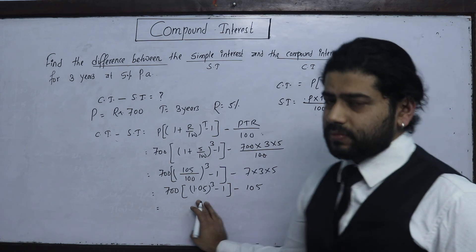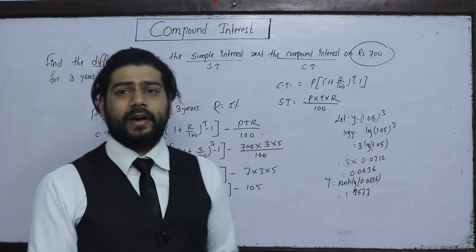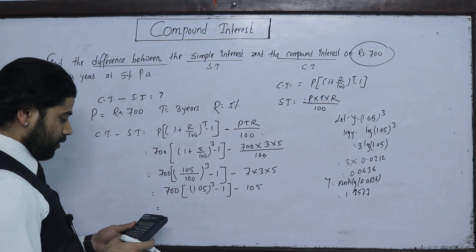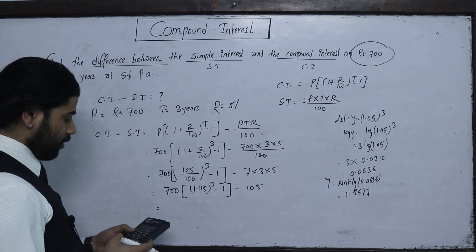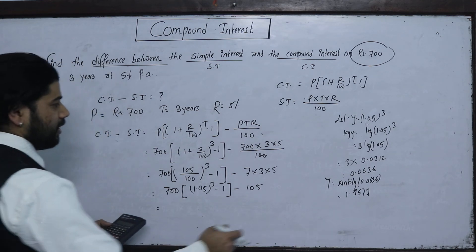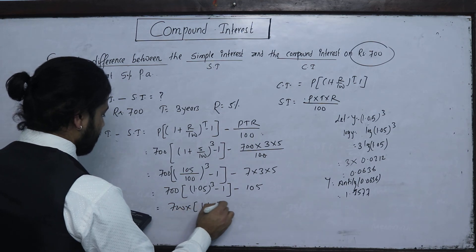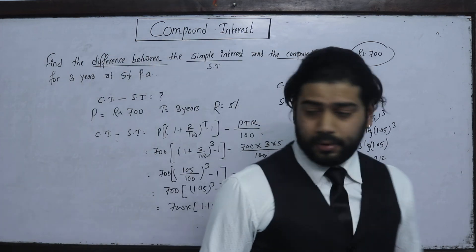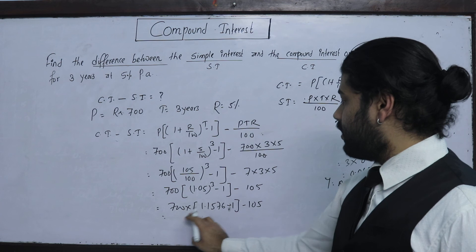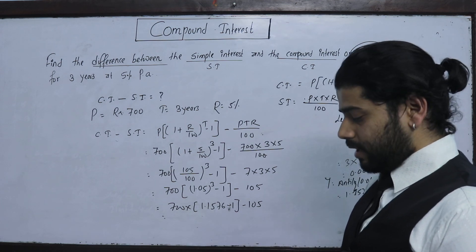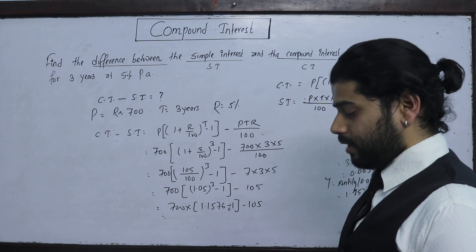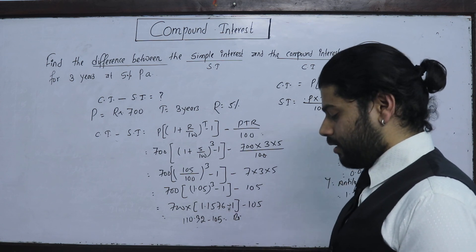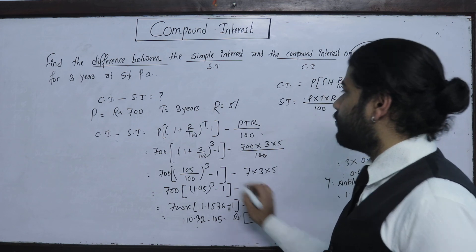The value of (1.05)^3 = 1.157625. So antilog(0.1577) gives approximately 1.17721. Then: (1.17721 − 1) × 700 = 0.15762 × 700 = 110.32. The difference CI − SI = 110.32 − 105 = 5.32 rupees.